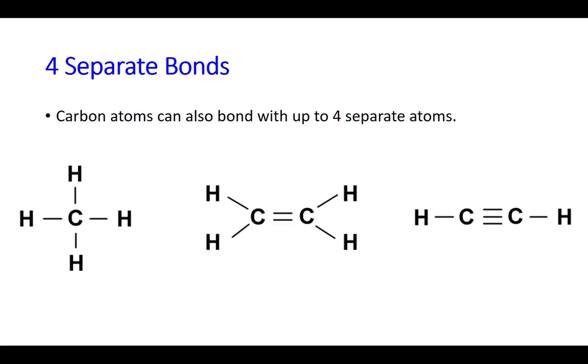What makes carbon unique is that it can bond with four different atoms. In the left example, which is methane, you notice carbon attached to four different hydrogens, all with single bonds. The middle molecule, ethine, has a carbon attached to three other atoms. So either the carbon is attached to another carbon with a double bond or to two different hydrogens.